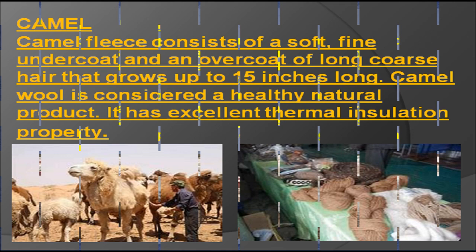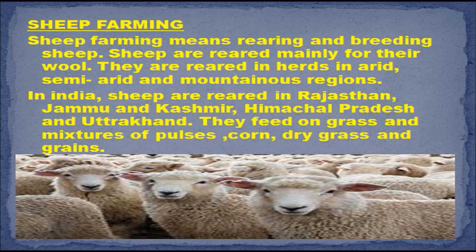Sheep farming means rearing and breeding sheep. Sheep are reared mainly for their wool. They are reared in herds in arid, semi-arid and mountainous regions. In India, sheep are reared in Rajasthan, Jammu and Kashmir, Himachal Pradesh and Uttarakhand. They mainly feed on grass.